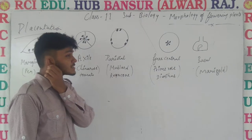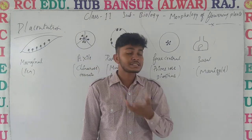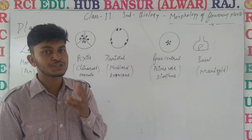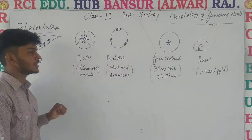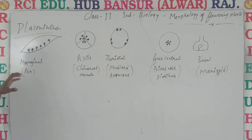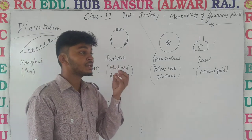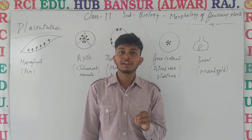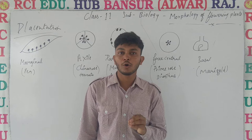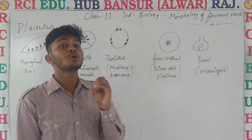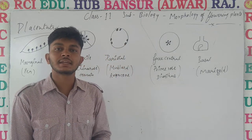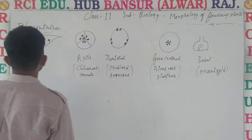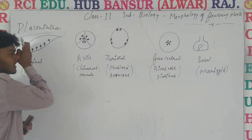We have talked about in the previous lectures what are the aestivations, what are the aestivations, what are the structures. After that, we also saw that the ovary has ovules. Ovary is containing ovules, but ovary has an arrangement of ovules, and that arrangement is known as placentation.